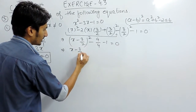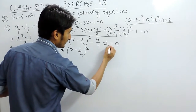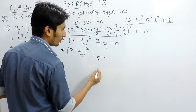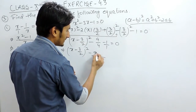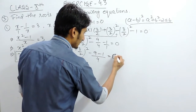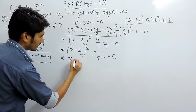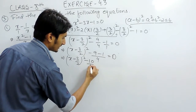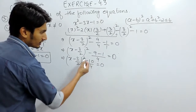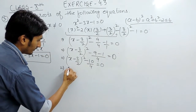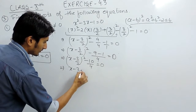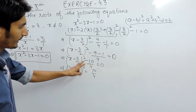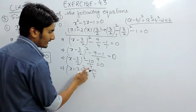Further solving: (x minus 3 upon 2) squared. To combine the two constants we take the LCM, which is 4, giving 9 minus 4 equals — wait — minus 9 minus 1 equals 0. Further solving: minus 1 minus 1 gives minus 10, so 4 times (x minus 3/2) squared equals 10. Shifting the constant: (x minus 3/2) squared equals 10 upon 4.